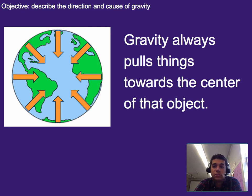Now gravity always pulls things towards the center of that object. I know we usually say gravity pulls things down, but if you're standing over here like we are, then down is towards the center of the Earth.